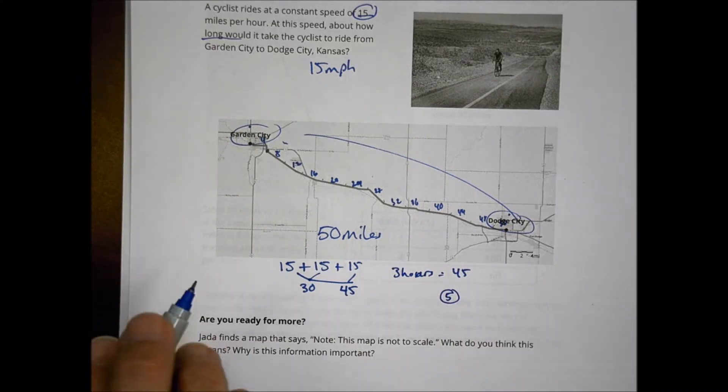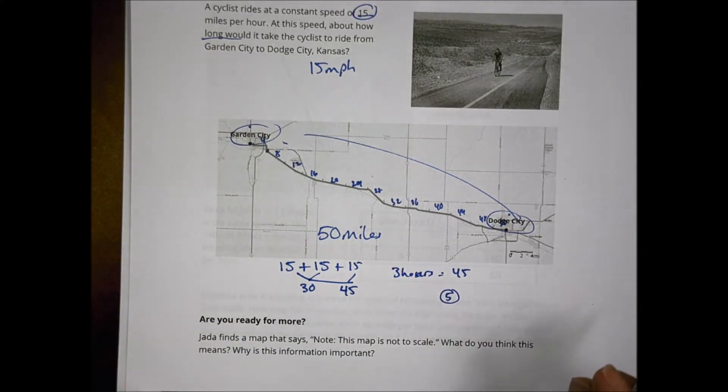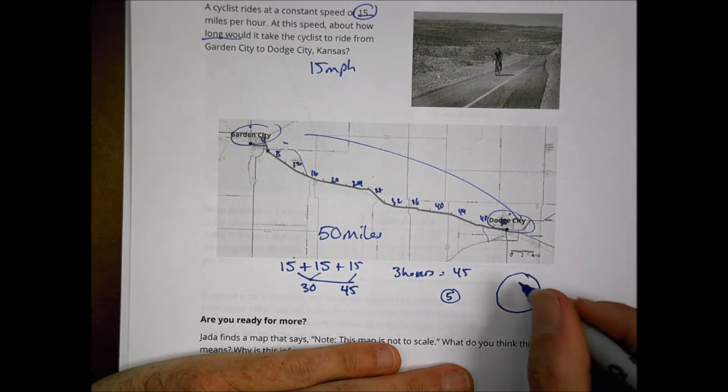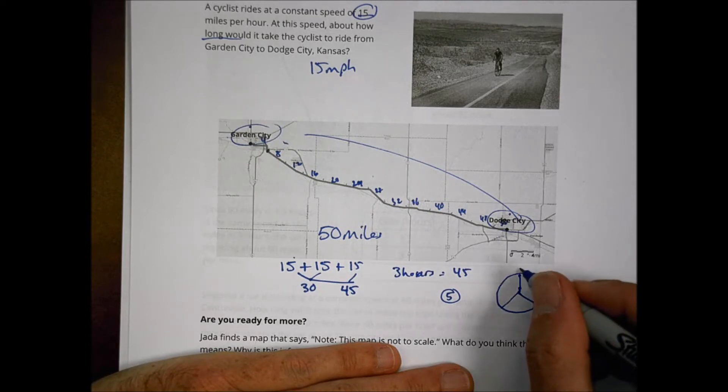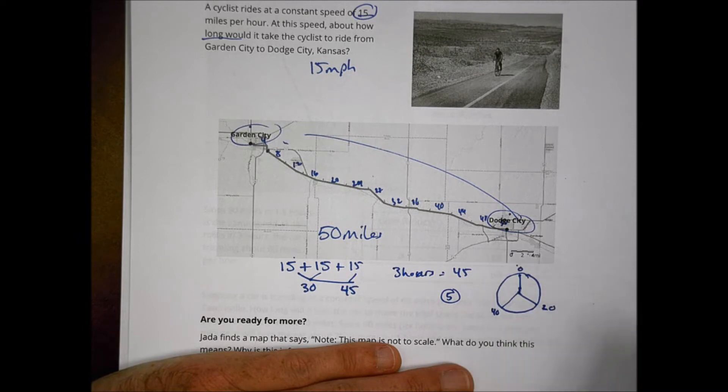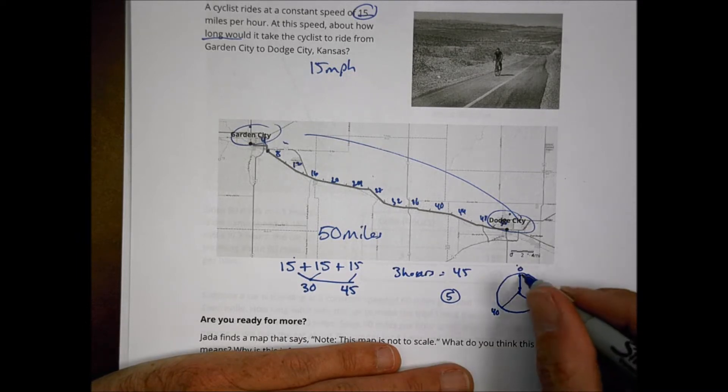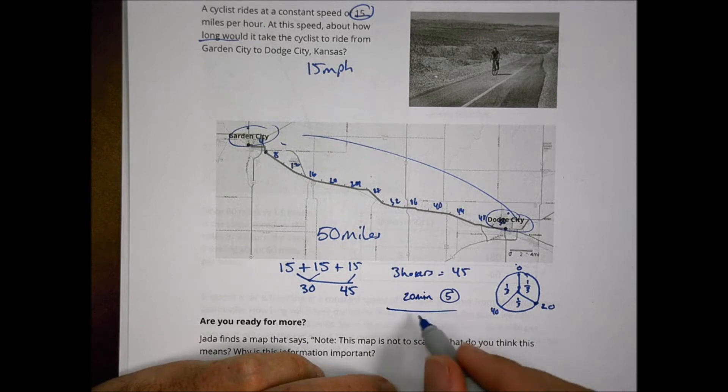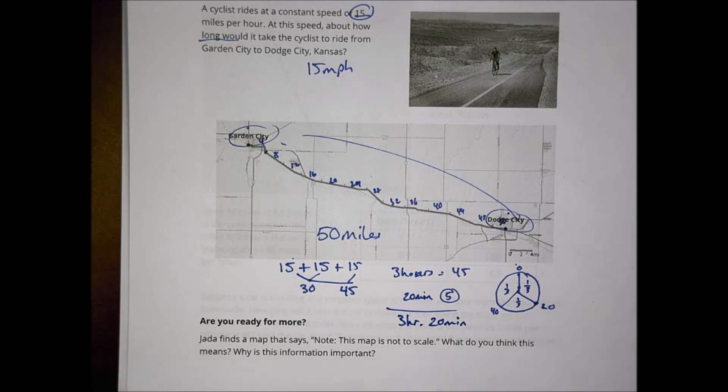And so five miles in this case here isn't going to take a whole hour because we're thinking about 15. So 15 is breaking up a time into thirds. So if this is my clock here, I have 20 minutes, I have 40 minutes and I have an hour. So because I want to go five miles, five miles is going to take me just a third. It's going to take me 20 minutes to get there. So that extra five is 20 minutes. So in total, we would say it should take this guy three hours and 20 minutes at a constant rate of 15 miles per hour in order to get from Garden City to Dodge City.